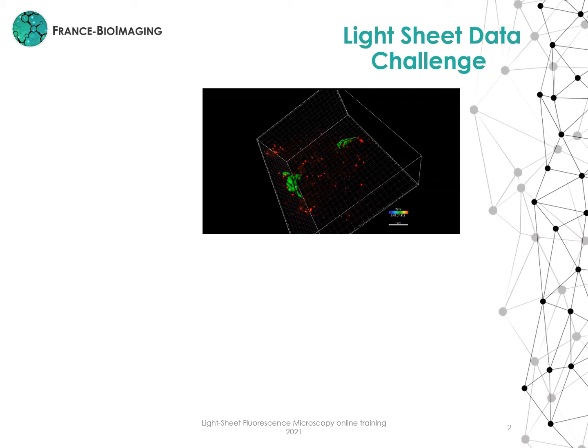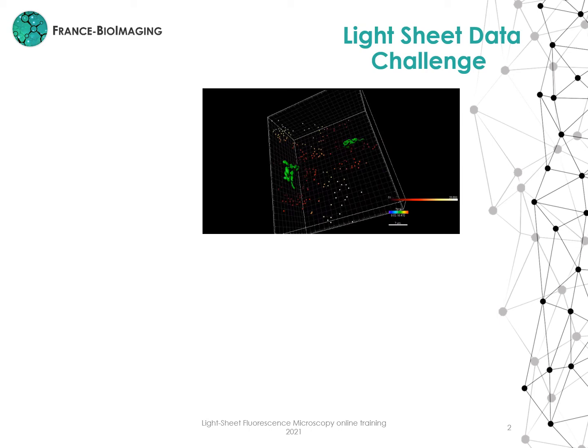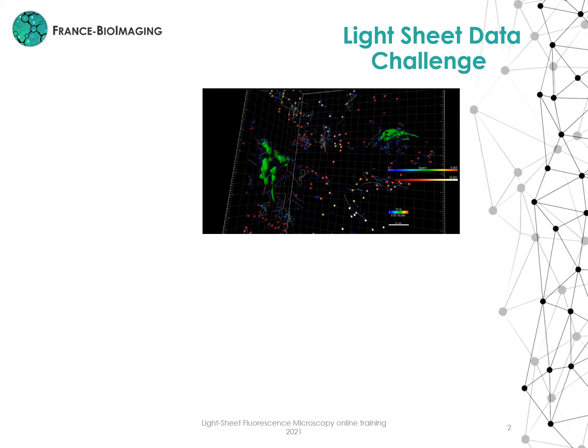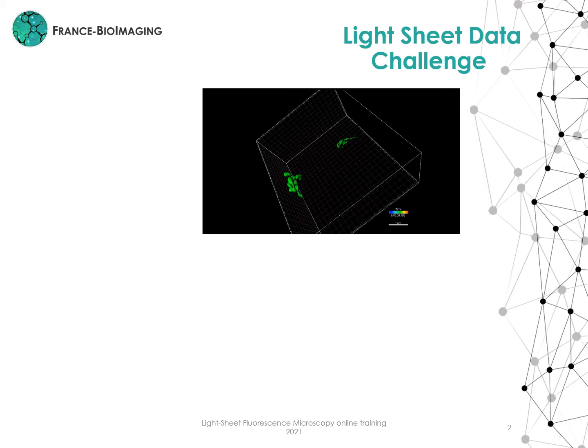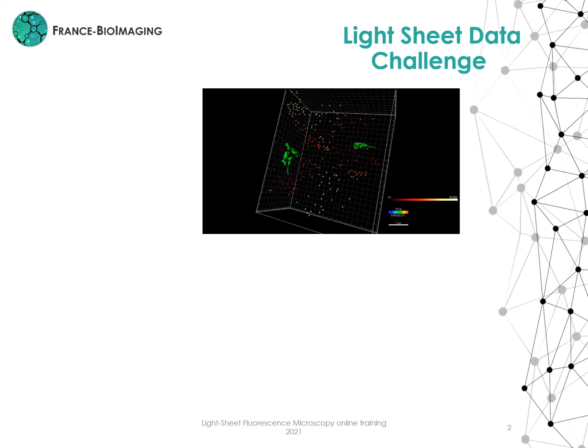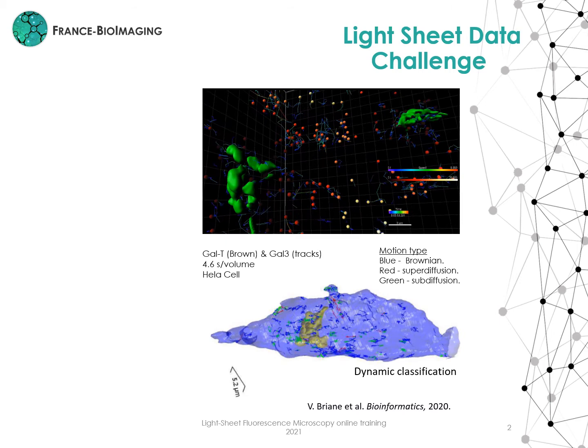I would like to show one simple experiment from the lattice light sheet microscope. Here I show the endocytosis of galectin-3, a lectin that enters into the cell by mainly clathrin-independent endocytosis. The workflow includes segmentation of the Golgi apparatus, spot detection, estimation of the distance to the Golgi and also to the cell membrane. Then there is 3D tracking and speed calculation. In fact, we could make even more complex analysis regarding the type of movement of these galectin-3 tracks.